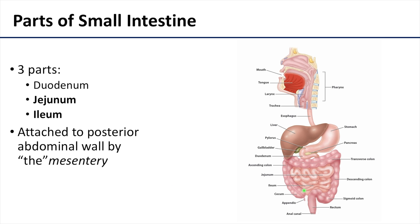The ileum will end at the ileocecal junction, which is the union of the terminal ileum and the proximal cecum, and at that point you're in the large intestine. So you go from stomach, duodenum, jejunum, and ileum into the large intestine.